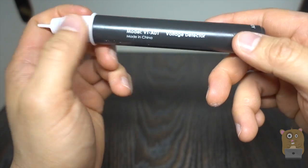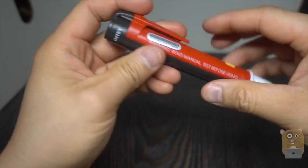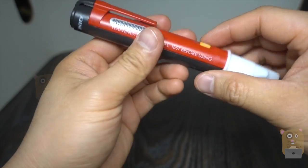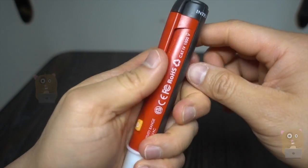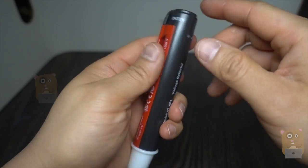It's got the rated model number printed on the bottom, and the warning printed right over here. We've got a shirt clip, and the battery is located under here.